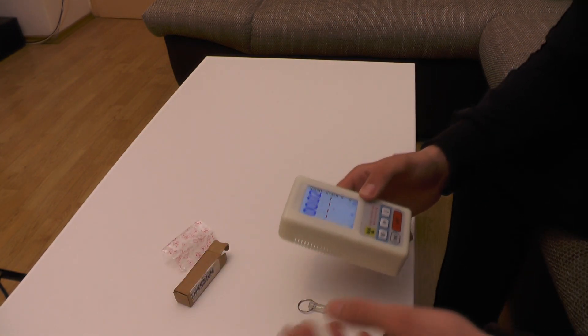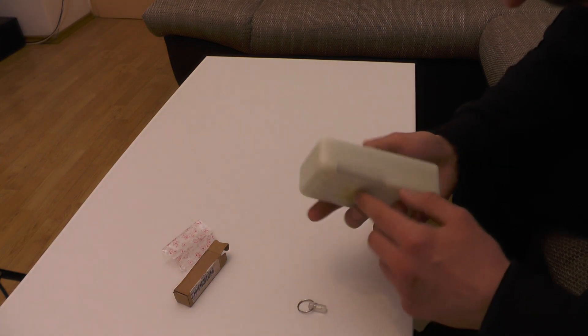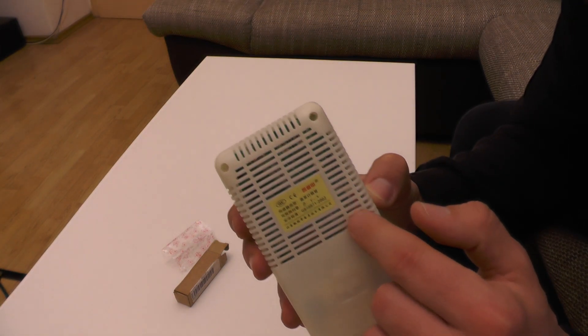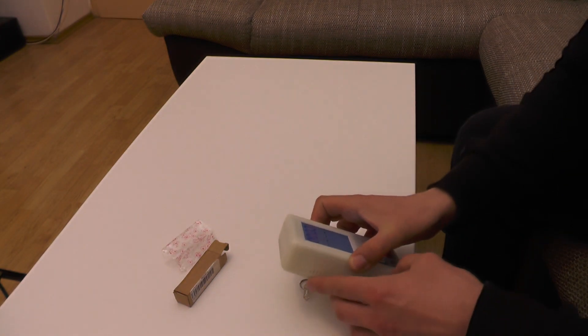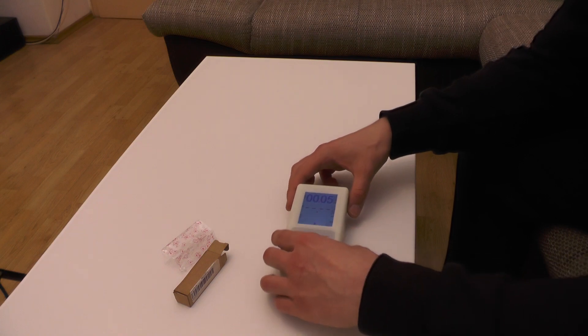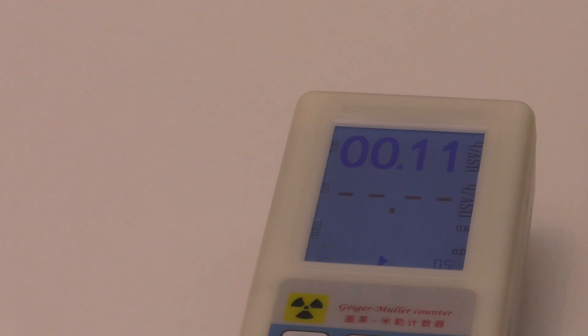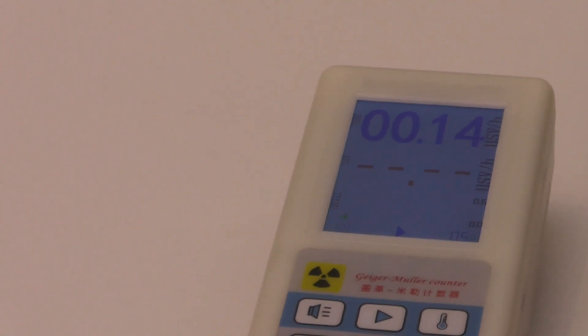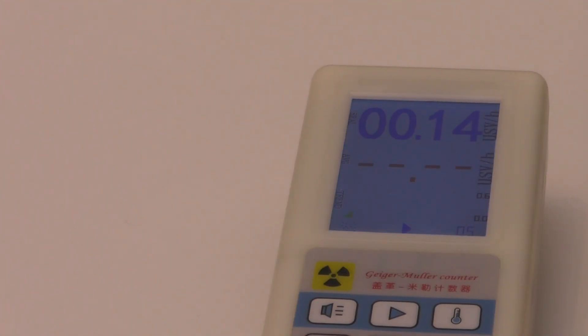So let's test the radioactive keychain just to see how radioactive it is. There is a tube in here, so I will be placing it over this radioactive keychain. Okay, so it is a bit radioactive, let me zoom in. We have to supposedly wait for I believe eight minutes, so I'll be leaving this thing and see you after eight minutes.